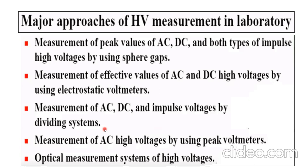Effective value or RMS value of AC or DC is measured by electrostatic voltmeter. Measurement of AC or DC voltage and impulse is done by dividing systems. Some kind of dividers, resistors or capacitors, capacitor divider, resistance divider, these kinds of philosophies are used.